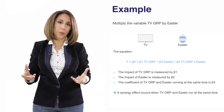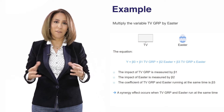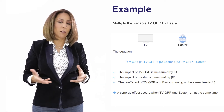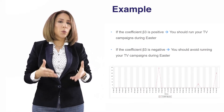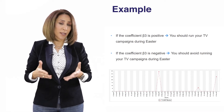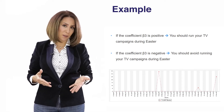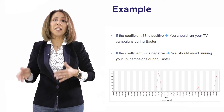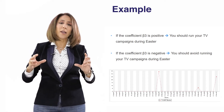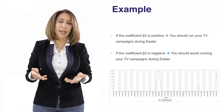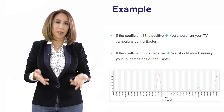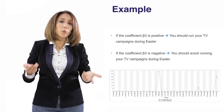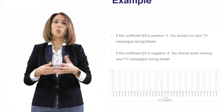How do we interpret the coefficient of that interaction effect? Assuming we have created this equation and estimated the coefficients, we find that beta 3 is a significant and positive coefficient. That means that each time your TV activity runs during Easter, it has an additional uplift compared to when it is not run during Easter. In that context, we can advise the brand to continue using television activity during Easter.